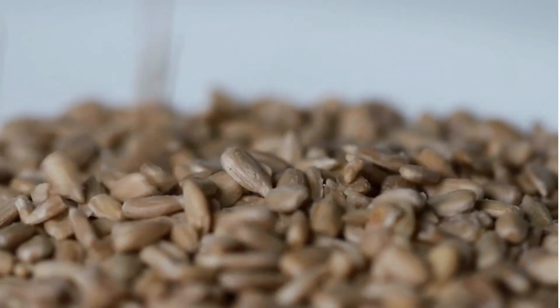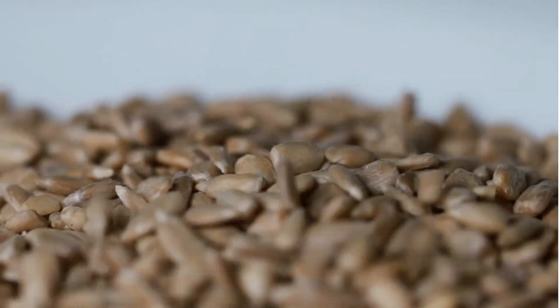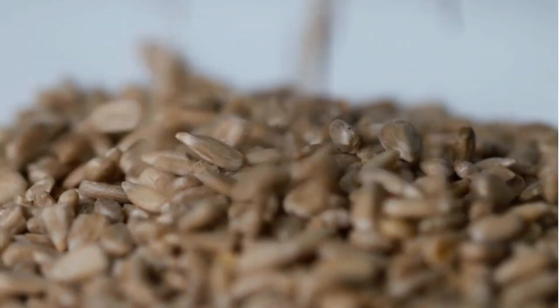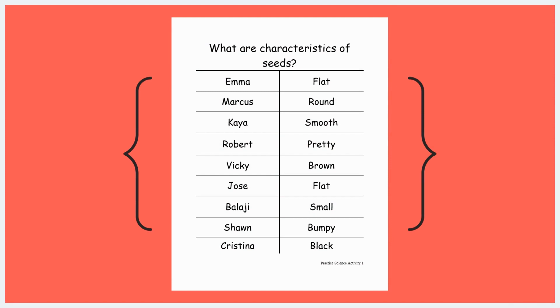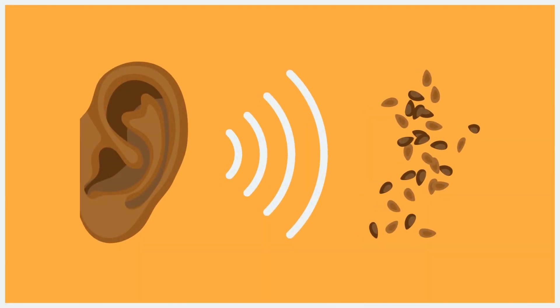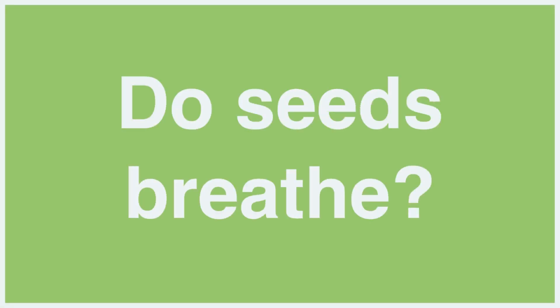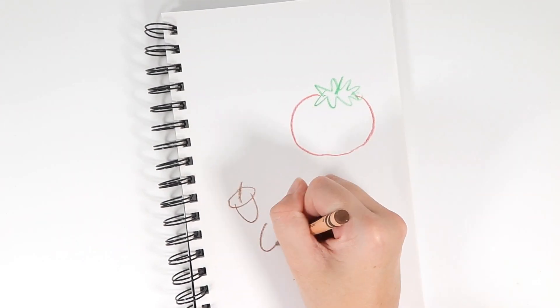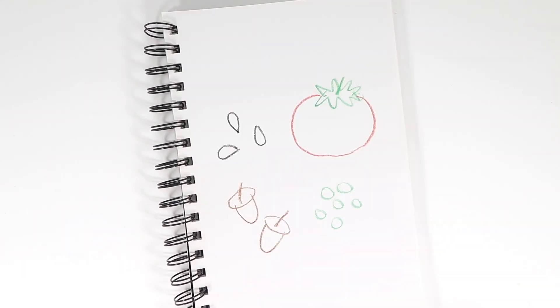Start by showing children a variety of seeds and asking questions to see what they know about seeds. Then create your documentation panel as you have children compare and contrast the seeds' characteristics. You should ask children fair questions that they can answer by observing the seeds, such as, 'What sound do the seeds make?' Build on prior learning by asking children questions about whether seeds are living or non-living, such as, 'Do seeds breathe?' Children should be provided with their science journals and encouraged to draw the types of seeds observed during class.